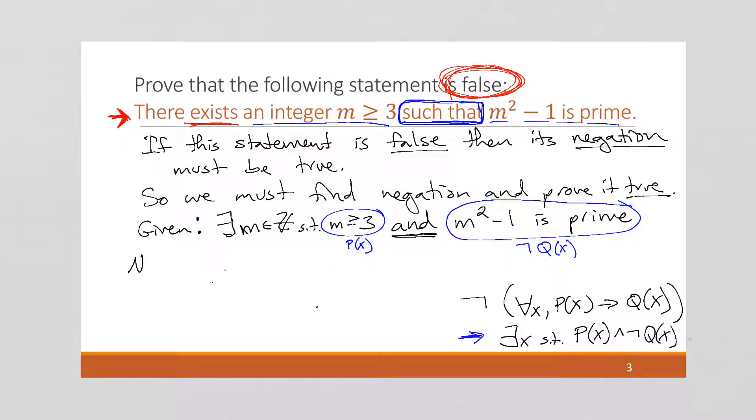So we have the negation, or we have the existential. To negate it, we want to get this universal part out. So I'm going to get the negation. And we're going to say for all x in our domain, for all m in the integers, if, now p of x stays the same. If m is greater than or equal to 3, then, now we do the opposite of the second part. So the opposite is that m squared minus 1 is composite, or is not prime.